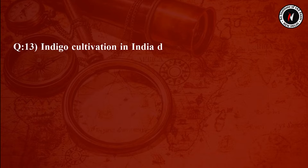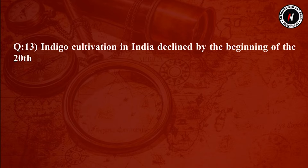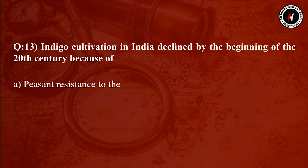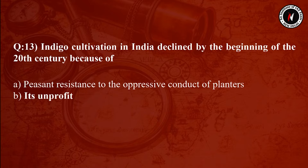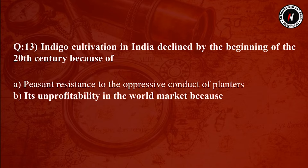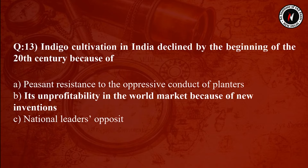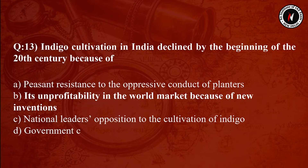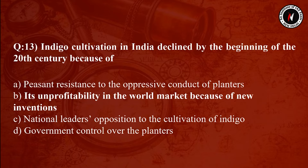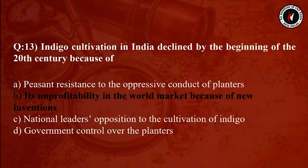Question number 13: Indigo cultivation in India declined by the beginning of the 20th century because of — Option A: peasant resistance to the oppressive conduct of planters. Option B: its unprofitability in the world market because of new inventions. Option C: national leaders' opposition to the cultivation of indigo. Option D: government control over the planters.